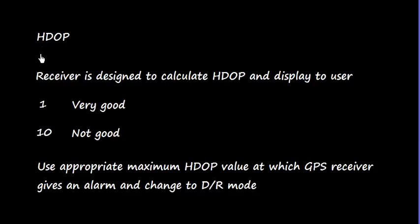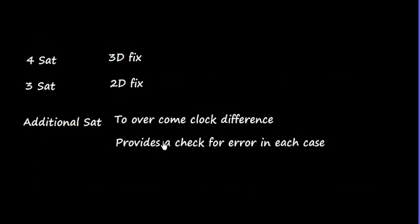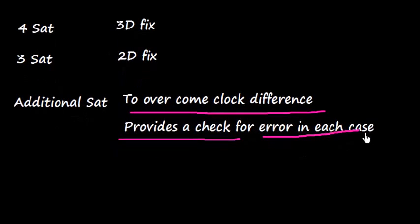HDOP means Horizontal Dilution of Precision, and receivers are designed to calculate HDOP and display it to the user. 1 means very good and 10 means not good. Use appropriate maximum HDOP value at which the GPS receiver gives an alarm and changes to dead reckoning mode, that is DR mode. We need 4 satellites to make a 3D fix and 3 satellites to make a 2D fix. We also need some additional satellites to overcome the clock difference and provide a check for error in each case.